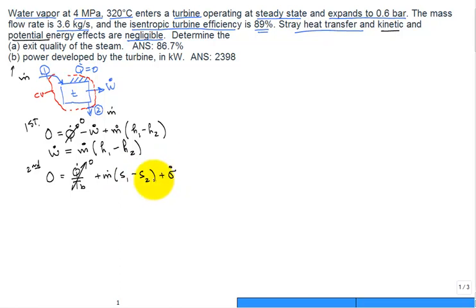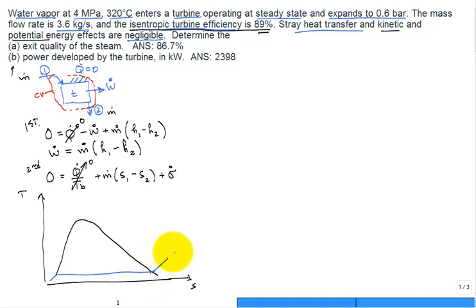And we have the mass flow rate bringing in entropy 1, taking out entropy 2, and then we have entropy generation. Okay, so we use this second law to explain, and we use it for the isentropic turbine efficiency, and it's probably good to show this on a property diagram, on a temperature entropy diagram. Okay, so we'll go ahead and put the dome, and we'll put two lines of really low pressure, and that would be, for this problem, 0.6 bar or 60 kPa.